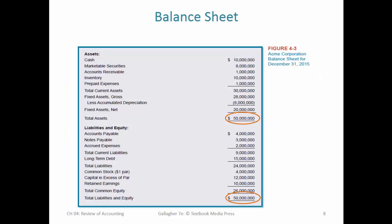Here's an example balance sheet for Acme Corporation. The balance sheet is a point in time — the book describes it as a photograph or snapshot. The income statement is more like a moving picture capturing events over the course of a year, whereas the balance sheet looks at one moment in time: the end date of your accounting period. So here are our assets listed in declining liquidity. We've got some cash, some securities — these are liquid because we could sell them today on the stock exchange or bond market.